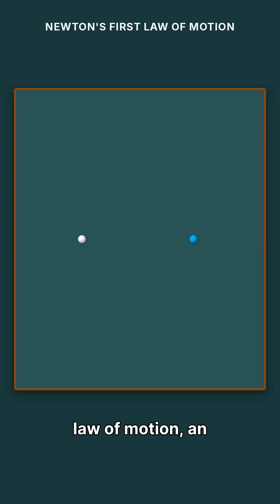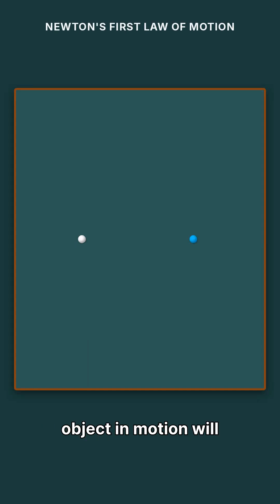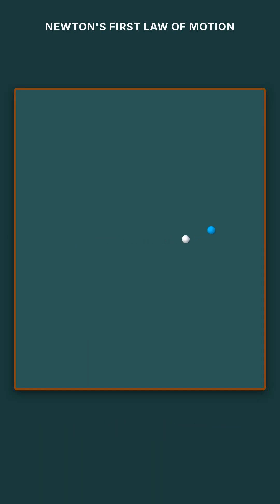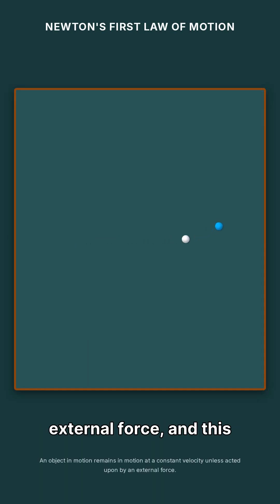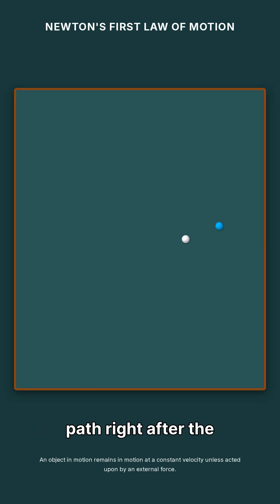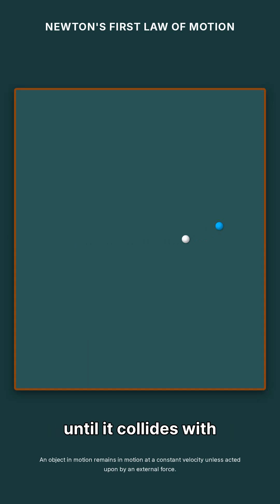According to Newton's first law of motion, an object in motion will remain in motion at a constant velocity unless acted upon by an external force, and this is perfectly illustrated by the cue ball's straight-line path right after the cue strikes it, continuing until it collides with another ball.